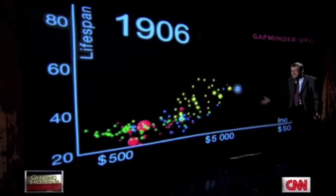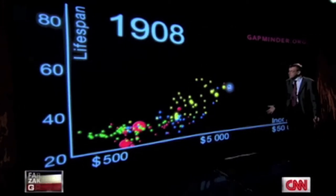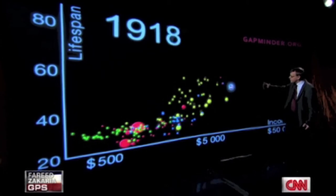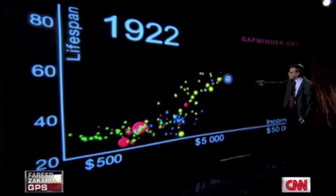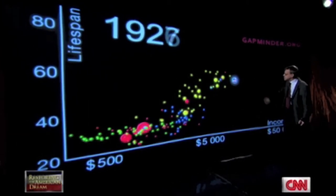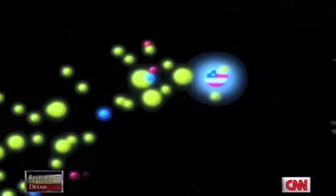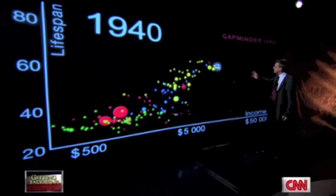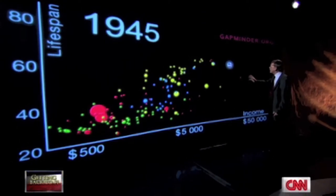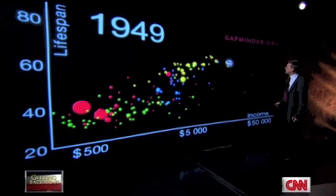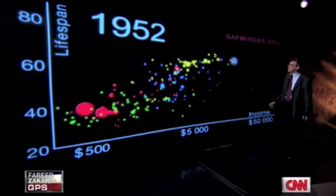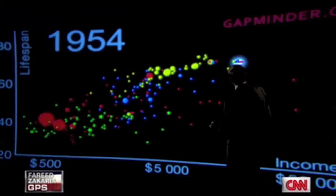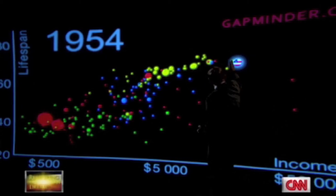From 1900, the United States takes the lead and becomes the engine of progress in the world — through the First World War, the Spanish flu, and through the 1920s, the U.S. is leading. It's only during the Great Depression that the U.S. falls back temporarily, then gets the lead again through the Second World War into the Cold War. We stop here at 1954, at the end of the Korean War. At this time, the United States was on top.